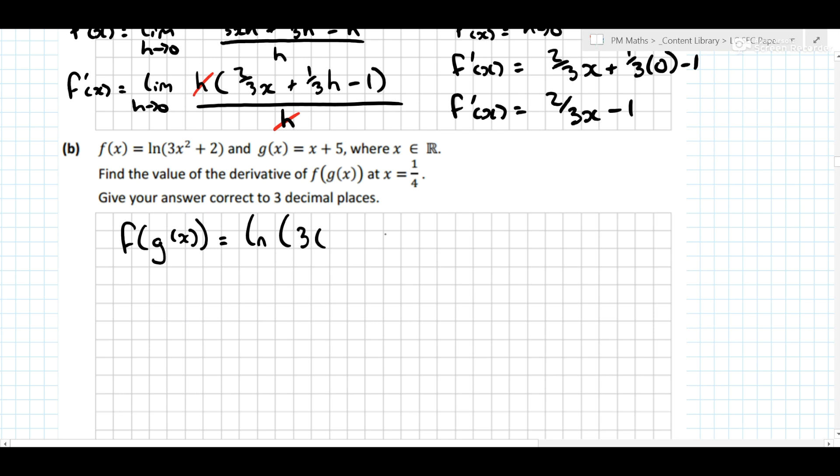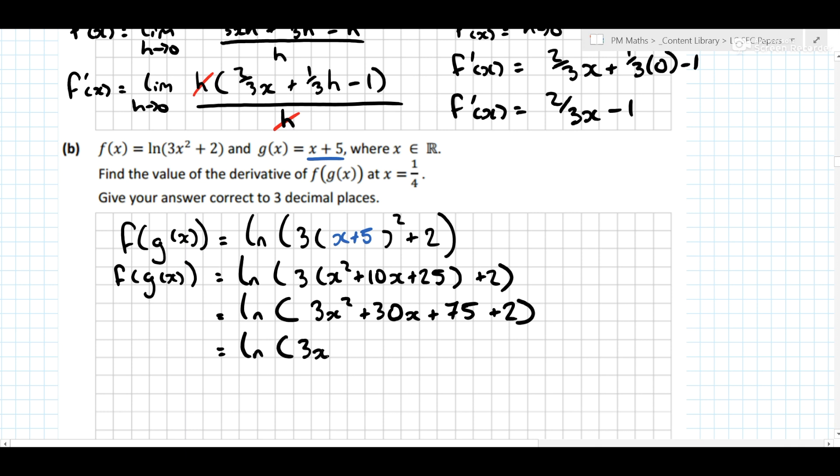So f after g of x is equal to ln of 3x squared plus 10x plus 25 plus 2, which is ln 3x squared plus 30x plus 75 plus 2, which is ln 3x squared plus 30x plus 77.